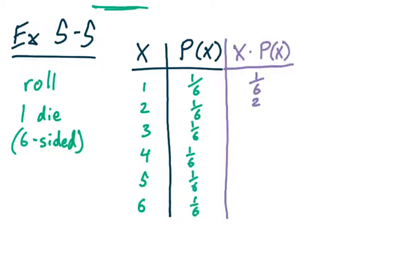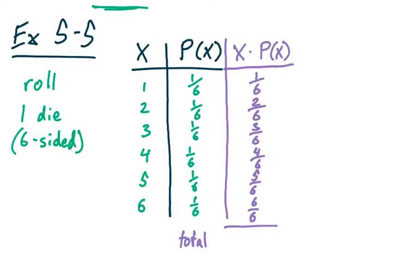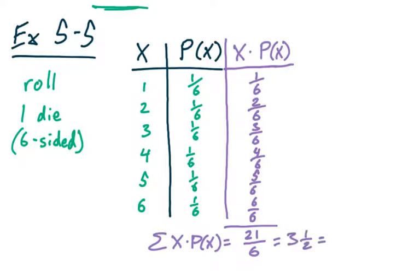So the sum of x times P(x) — we add it all up — we get 21 over 6, or three and a half, or as a decimal, 3.5. And that is how we calculate the mean, mu.